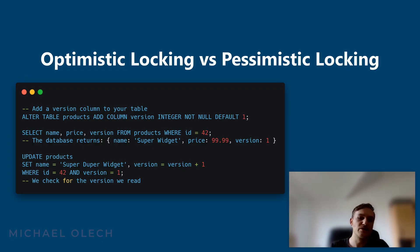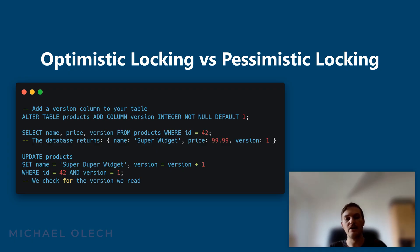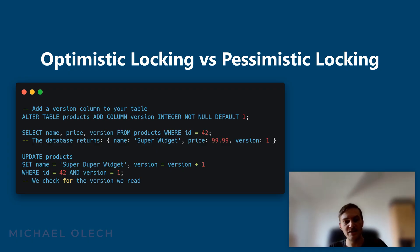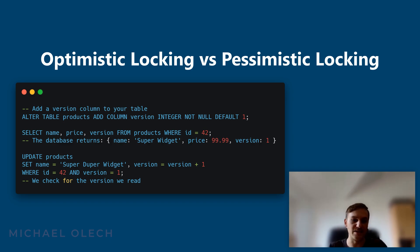Use optimistic locking when you have many reads and infrequent writes, and the likelihood of two users editing the same data simultaneously is low. This is a great fit for most web applications like a CMS or any e-commerce site where many people can browse products but only a few update them. That's all in this video — see you in the next one.